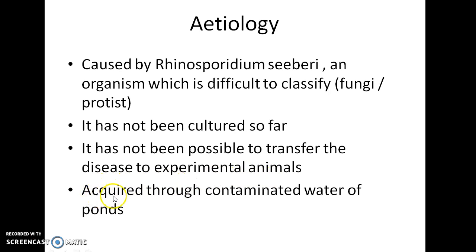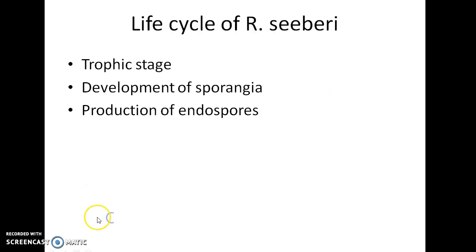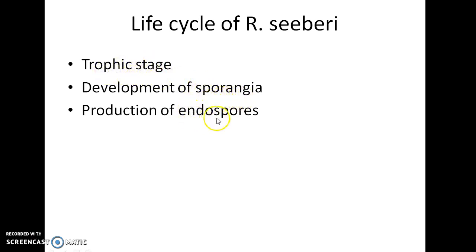Rhinosporidium seeberi is acquired through contaminated water of ponds. Now let us see about the life cycle of Rhinosporidium seeberi. It has a trophic stage from which sporangia develop. This sporangia gives rise to endospores. These endospores again develop into the trophic stage.